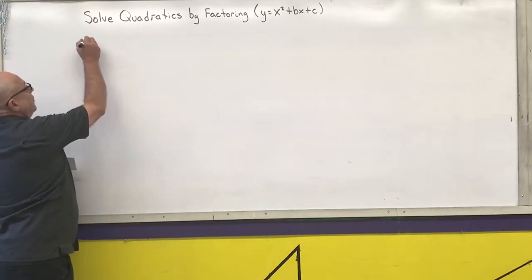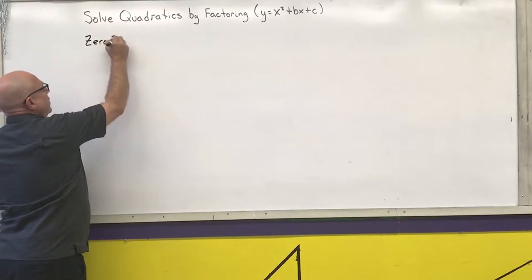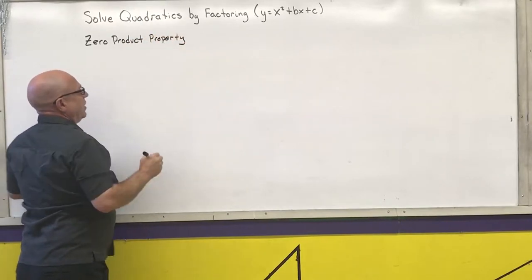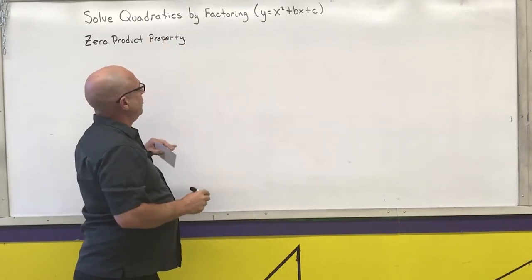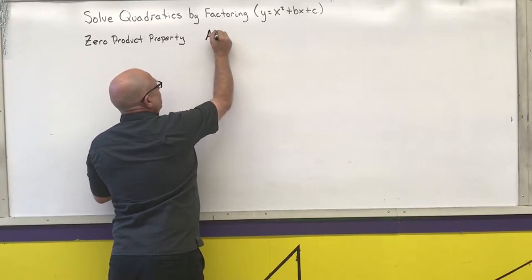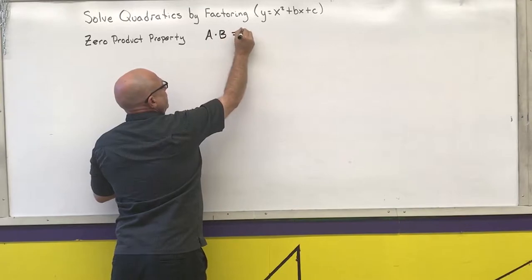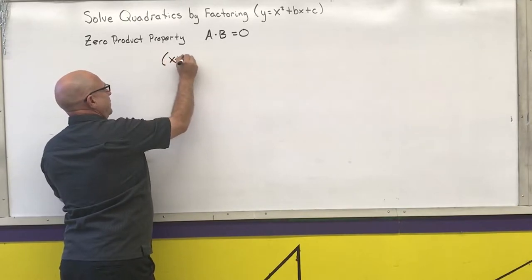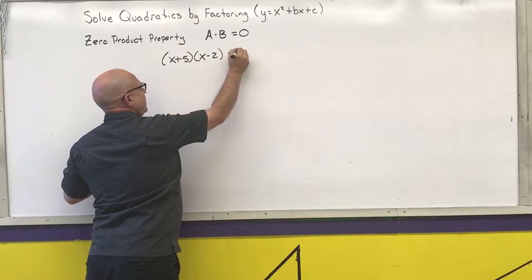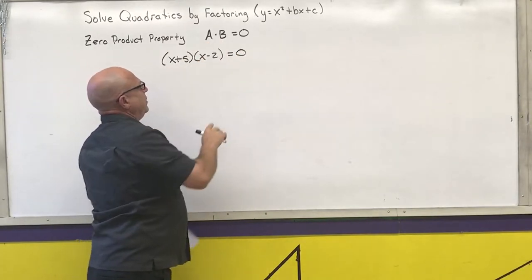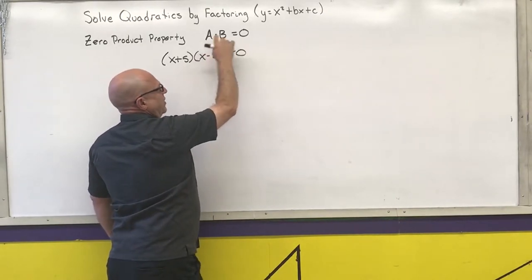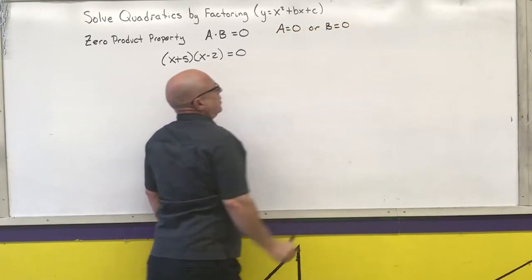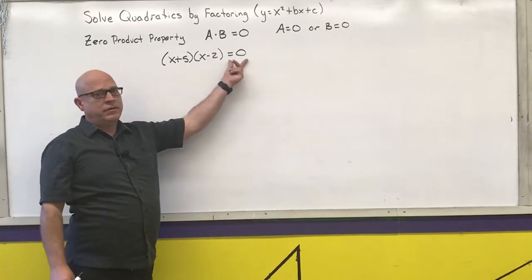First, I want to remind you of the zero product property. For solving equations, if I have two expressions multiplied together that equal zero — for example, (x + 5)(x − 2) — the only way to get zero from multiplication is if the first expression equals zero or the second expression equals zero. We're going to use that fact to solve our quadratics.